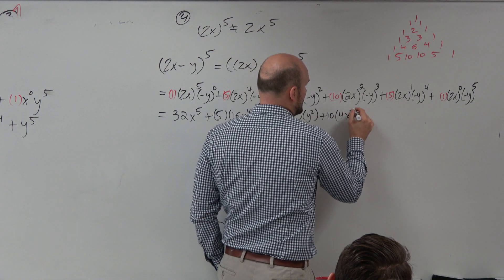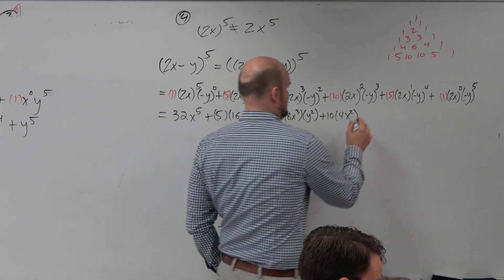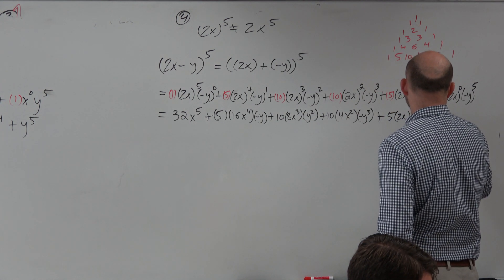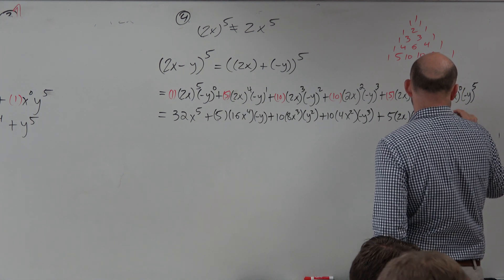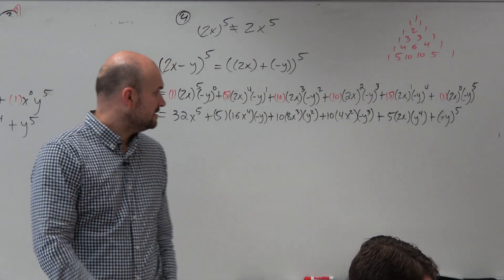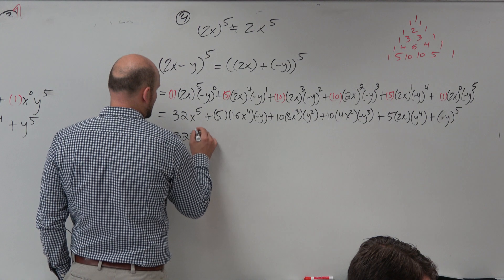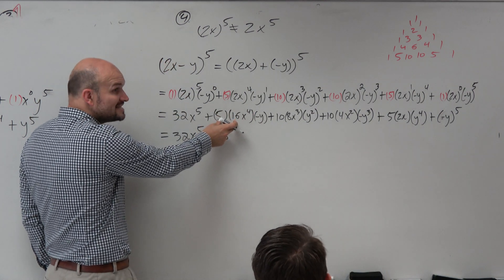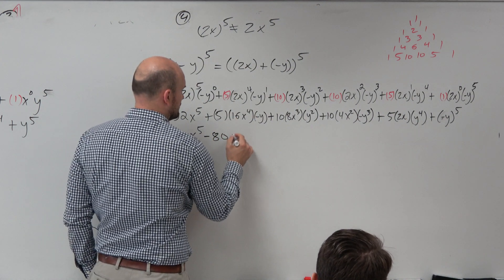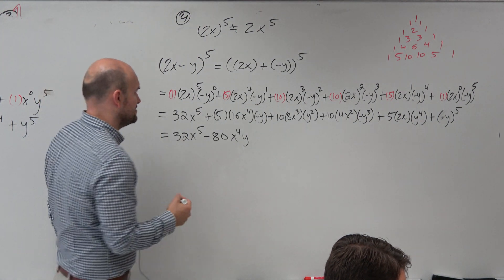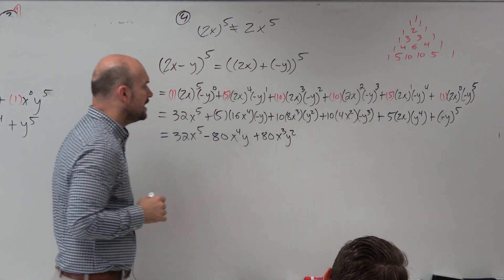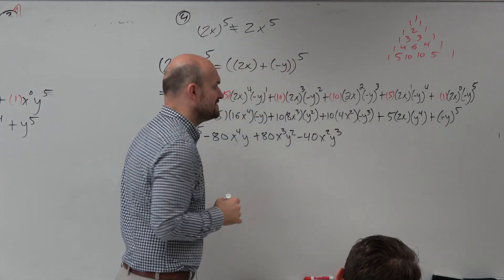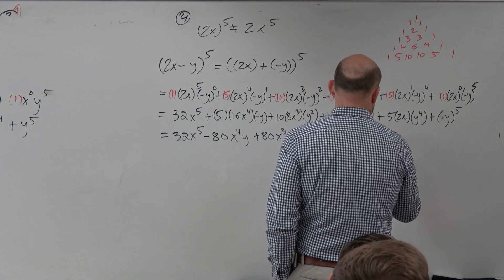2x squared is 4x squared. Negative y cubed is negative. Negative y cubed, plus 5 times 2x times a positive y to the fourth, plus a negative y to the fifth. You don't need to show all this work, but I'm doing this so you can see the second step. 5 times 16 is 80 — positive 80, but then you're multiplying by a negative, that's why you get negative 80. 10 times 8 is positive 80. 10 times 4 times a negative 1 is negative 40. 5 times 2 is 10. And then minus y to the fifth.